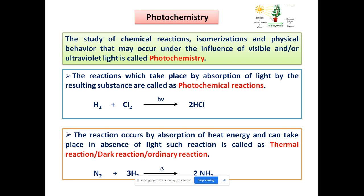A photochemical reaction is a reaction that takes place by absorption of light from the UV-visible region. The range of UV-visible light is approximately 200 nm to 800 nm, or 2000 Å to 8000 Å. In photochemistry, the light used from the electromagnetic spectrum is specifically UV-visible light — the same light used in electronic spectroscopy or UV-visible spectroscopy.